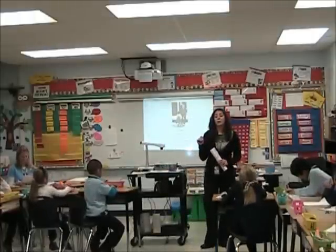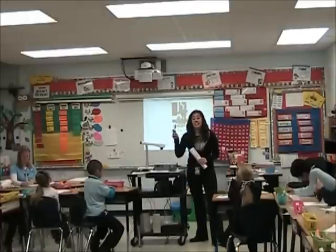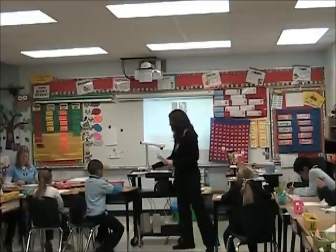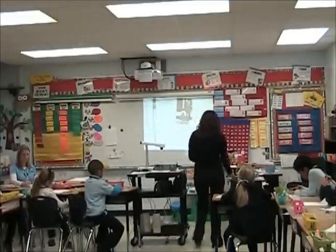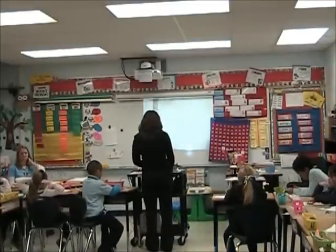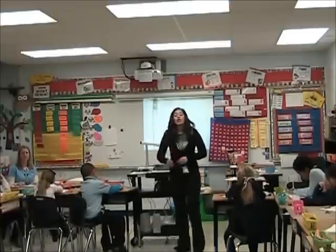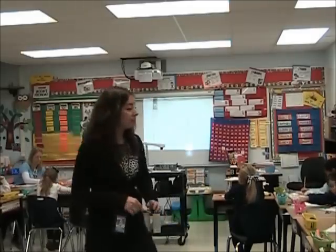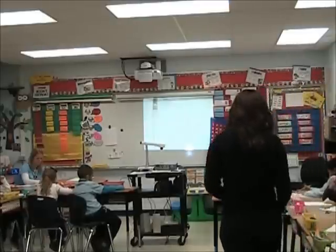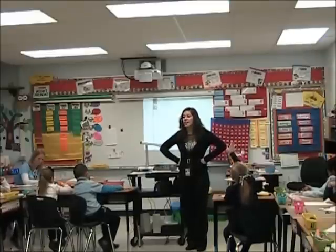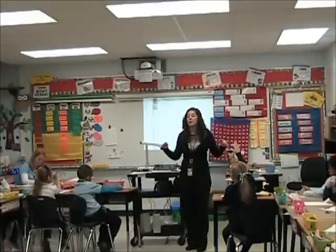We are going to use our crayons and list colorful words that describe Ruby Bridges in our semantic map. So let's see — do we have our name on our paper? Yes. Okay, very good, boys and girls. Today we are going to think about words that will describe Ruby Bridges. What are some things that we remember from the story that are good, colorful, describing words?